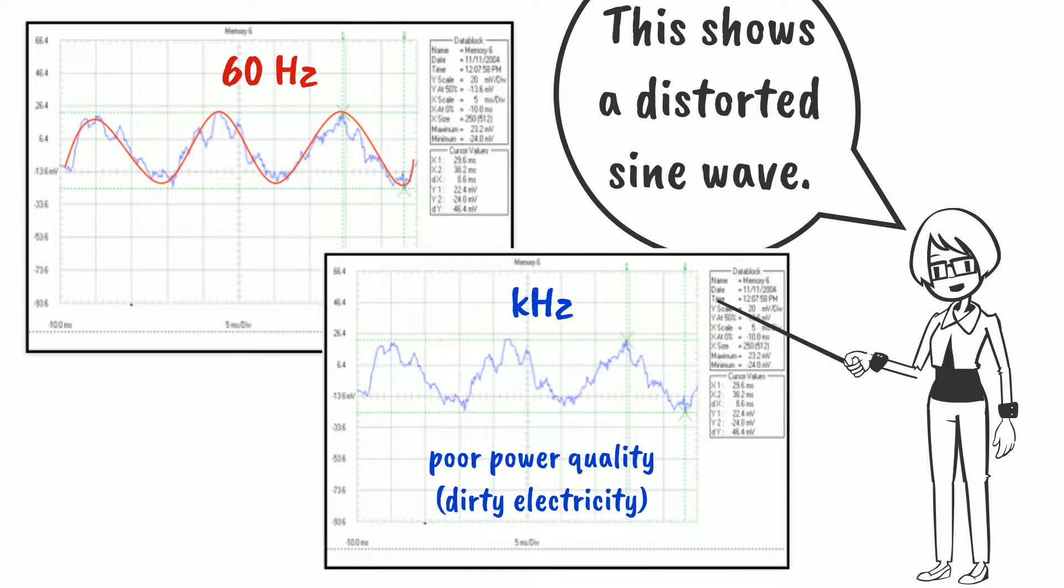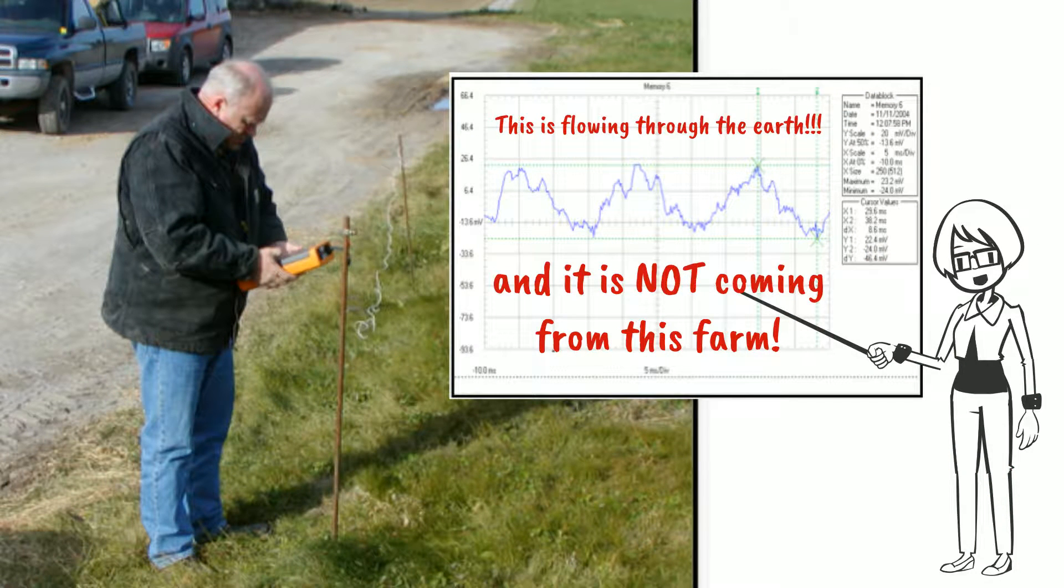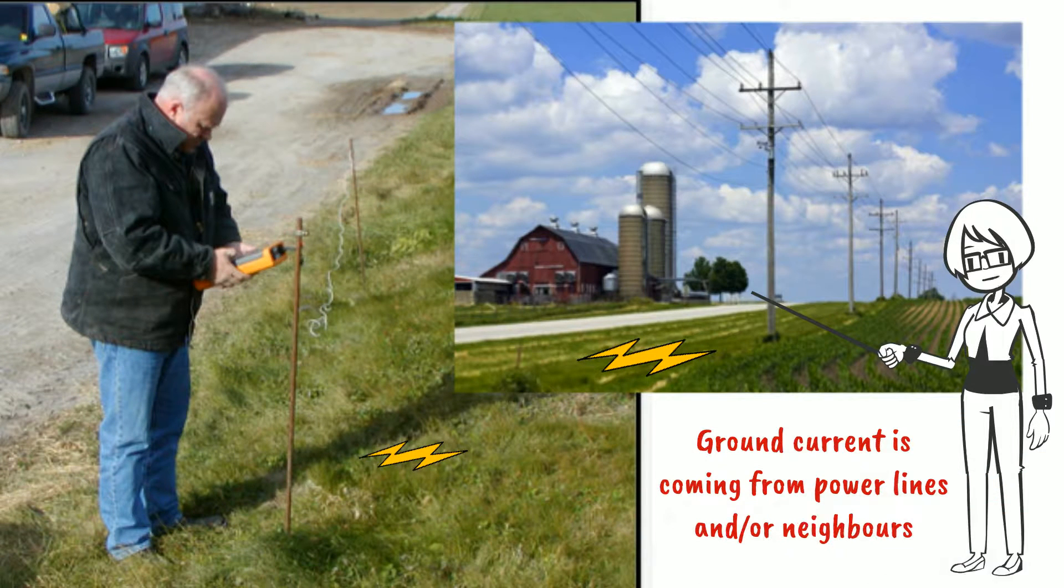It is an example of poor power quality or dirty electricity. What is important to note here is that the electricity to this farm was turned off. The ground current on this farm had to come from off-farm sources.